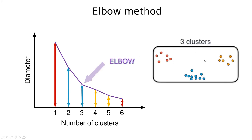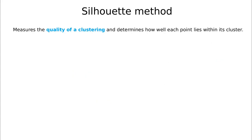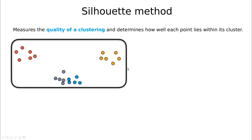In this example, the elbow corresponds to three clusters, which makes a lot of sense. The second most popular method for determining k is called the silhouette method. The idea is to measure the quality of clustering by determining how well each point fits within its cluster.